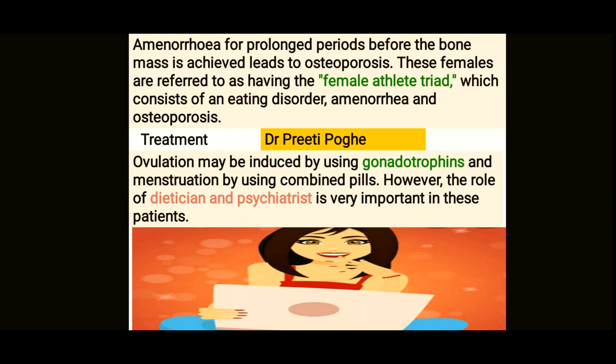Treatment for these patients: gonadotrophins can be given to induce ovulation, and menstruation can be continued with the combined oral contraceptive pill or cyclical therapy. However, because these patients have problems with eating, amenorrhea, and osteoporosis, they fundamentally need long-term input from a dietitian and psychiatrist to bring them back to a BMI of more than 19.